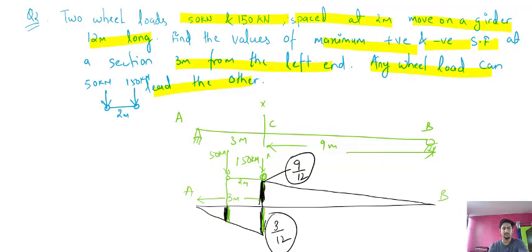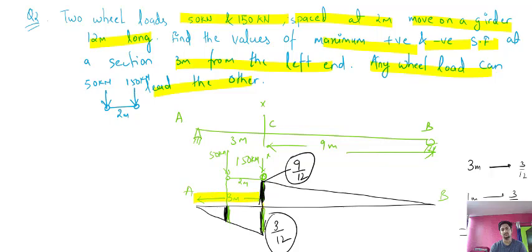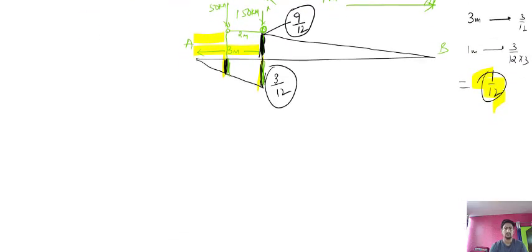To find the ordinate where the 50 kN load is acting: for 3 meters the ILD goes 3/12 upward, so for 1 meter it is 1/12. Using the unitary method, the ordinate at the 50 kN position is 1/12. Actually, since the 50 kN is in the negative region at distance 1 meter from the section, the ordinate there is 1/12.